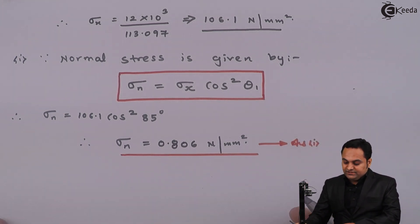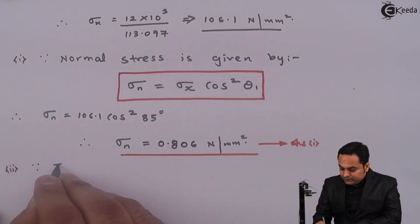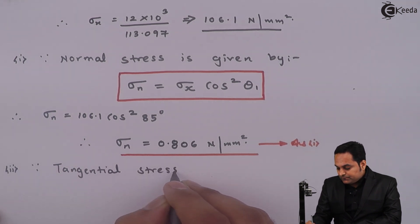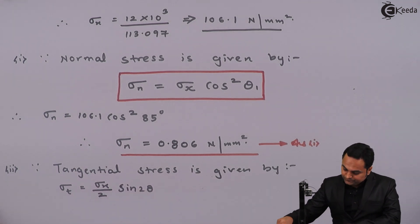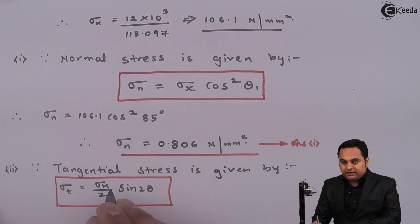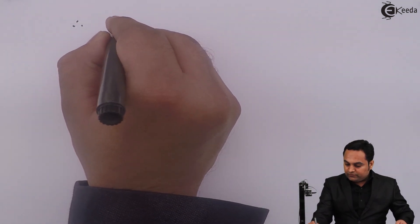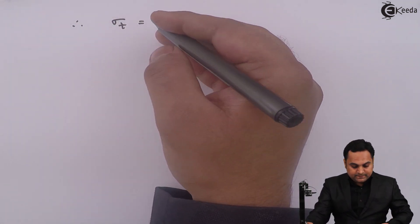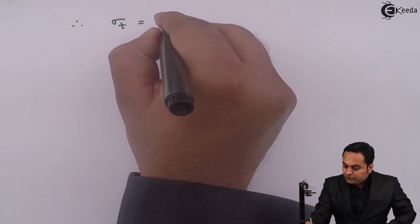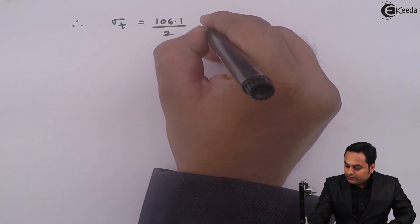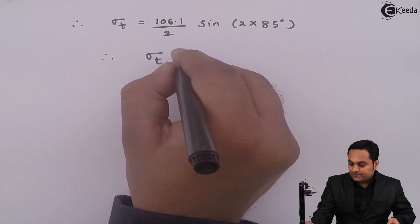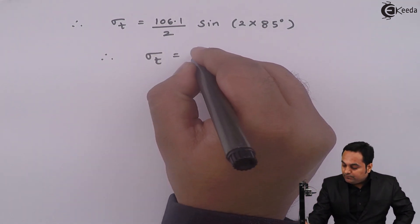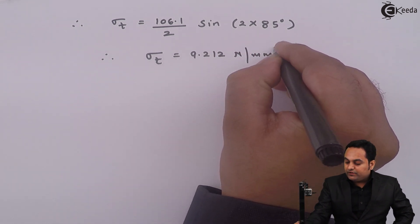Then we have to find the tangential stress. Tangential stress is given by: σt = (σx / 2) × sin(2θ₁). Putting the values: σt = 106.1 / 2 × sin(2 × 85°). From this, the tangential stress comes out to be 9.212 N/mm². This is the second answer.